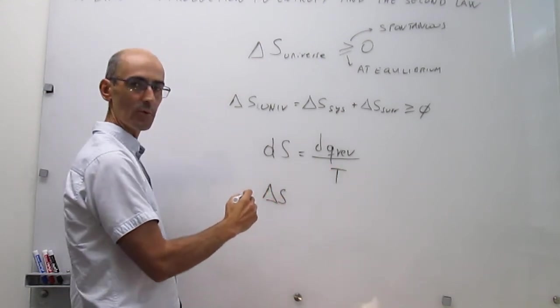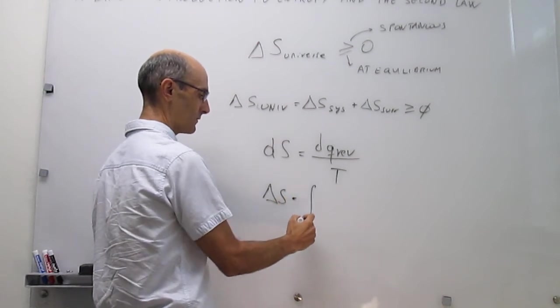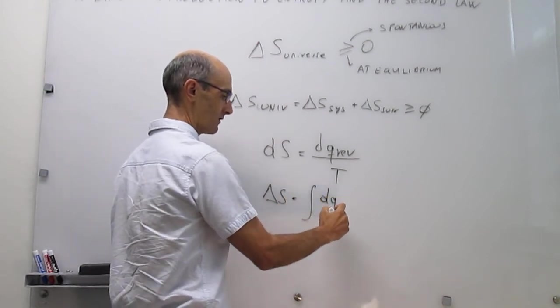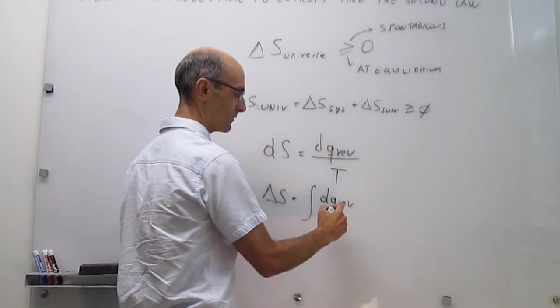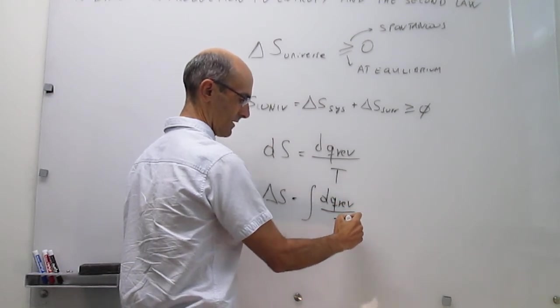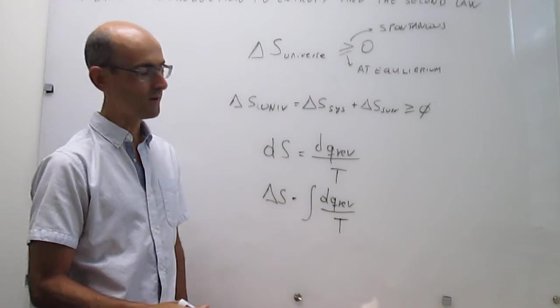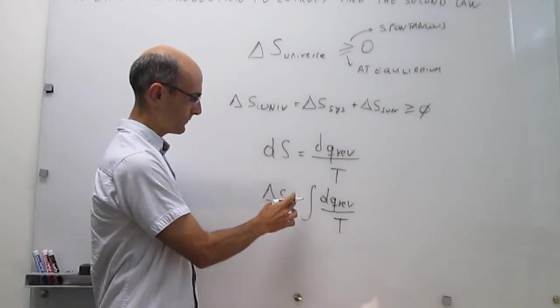is simply going to be equal to the integral of differential of heat if the process were to take place reversibly, and that's something that we learned in the first law, divided over temperature.